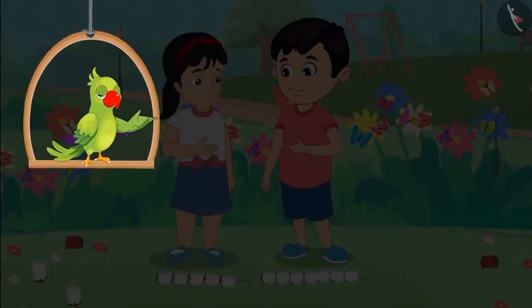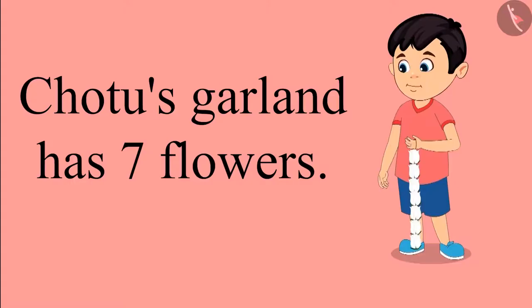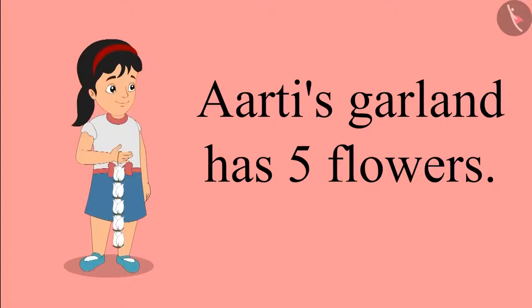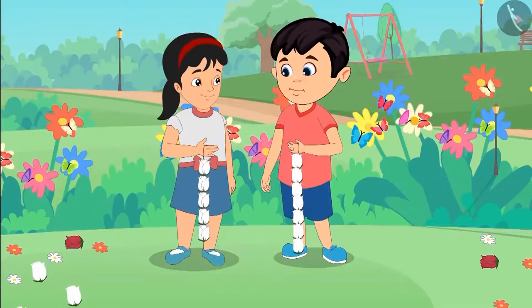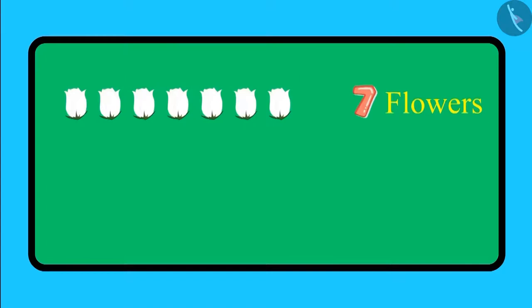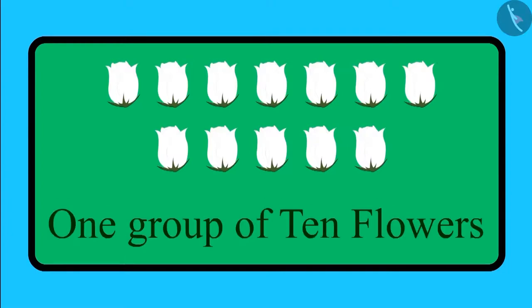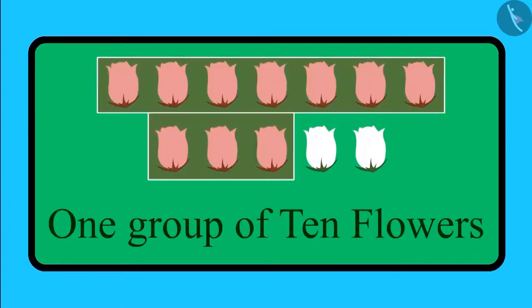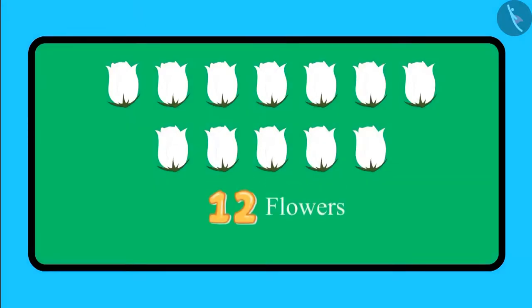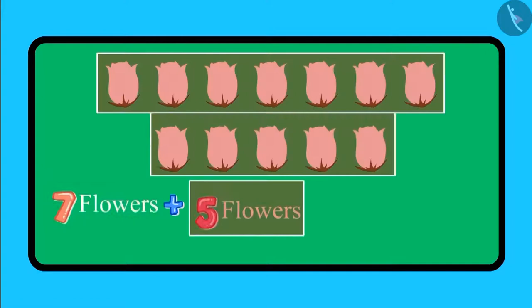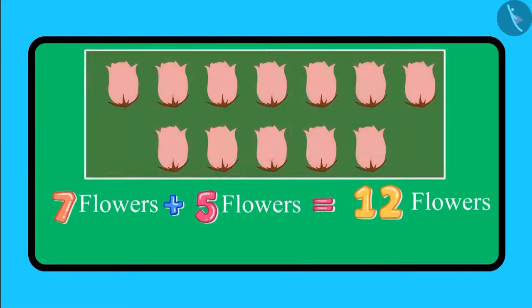Chotu and Aarti started making the garland of flowers. Chotu used 7 white flowers to make his garland. And Aarti used 5 white flowers in her garland. So children, can you tell us how many white flowers did Chotu and Aarti use in their garlands? Let us see. Chotu added 7 white flowers and Aarti added 5 white flowers. So children, if we look at all the flowers together, we have one group of 10 flowers and 2 more flowers. So that makes a total of 12 flowers. 7 flowers added to 5 flowers make a total of 12 flowers.